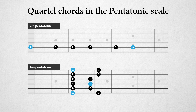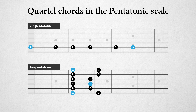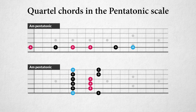The pentatonic scale can be a great platform in relation to quartal arpeggios. If we look at this pentatonic scale pattern, we can discover three quartal arpeggios within this pattern and thus within the scale. Starting on A, we have the quartal chord A, D, and G. Starting on E, we have the quartal chord E, A, and G. And starting on D, we have the quartal chord D, G, and C.